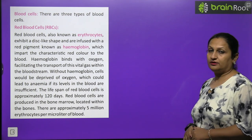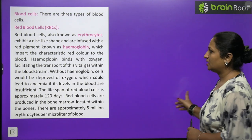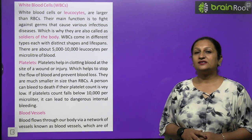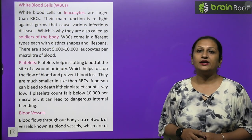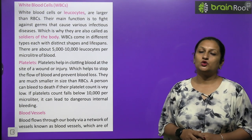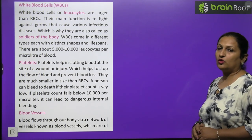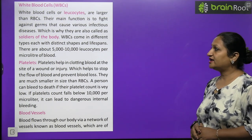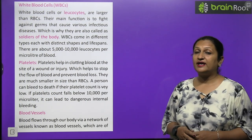There are approximately 5 million erythrocytes per microlitre of blood. After RBCs come white blood cells, also called leukocytes. They basically provide immunity to the body. If any foreign object like a virus or bacteria enters the body, WBCs fight against them and finish them off by a process called phagocytosis. There are about 5,000 to 10,000 leukocytes per microlitre of blood — fewer than RBCs, but larger in size.